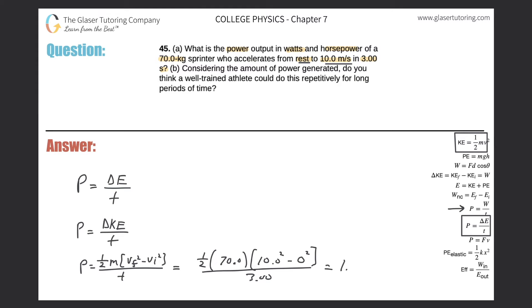All we need to do is calculate. So 0.5 times 70 times 10 squared, all divided by three. And we get a value of about 1.17 times 10 to the third watts, since we just calculated the power. That's the answer in watts.